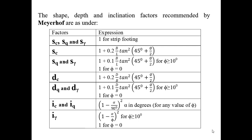Similarly, Ic and Iq can be calculated by their respective formulas. Alpha is the angle between the resultant load and the vertical. Iγ can be calculated as (1 − α/φ)² when φ ≥ 10°. If φ = 0, Iγ is taken as 1.